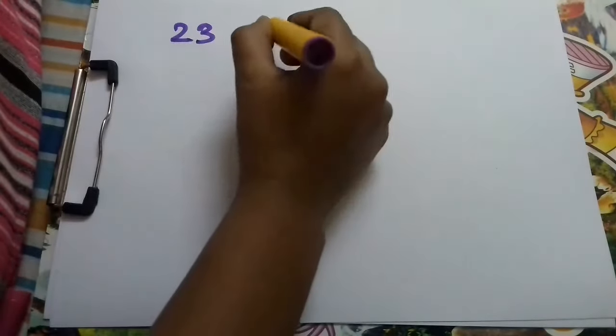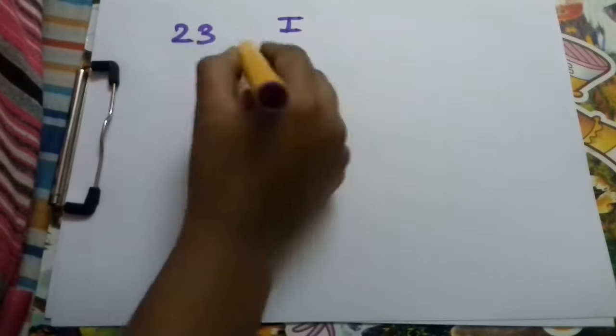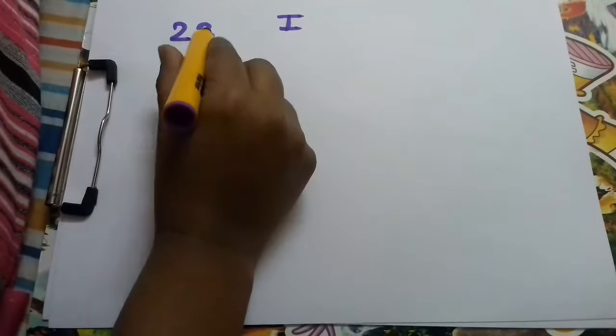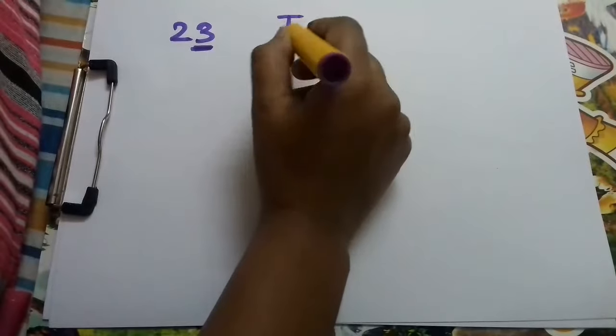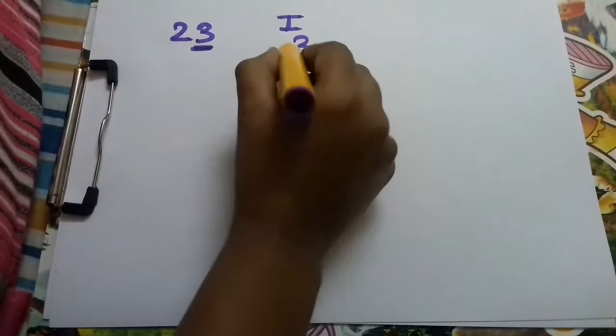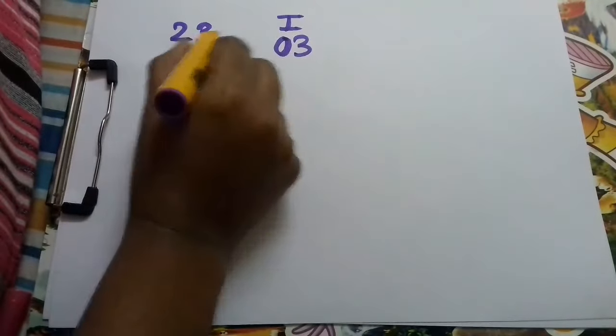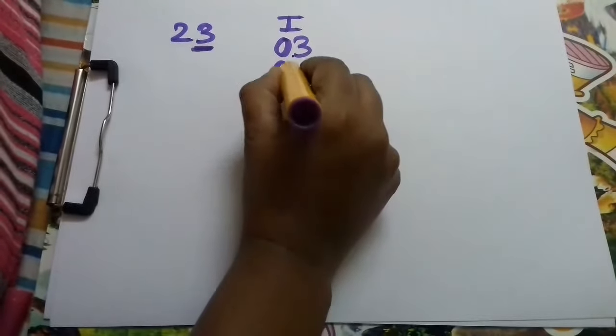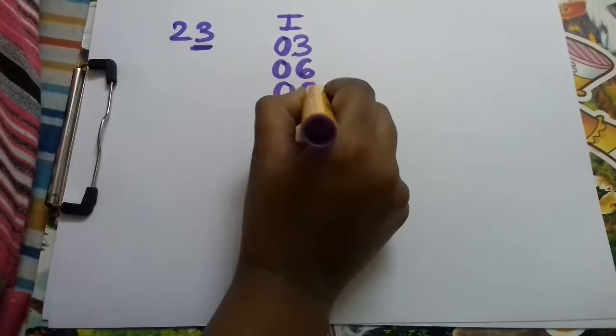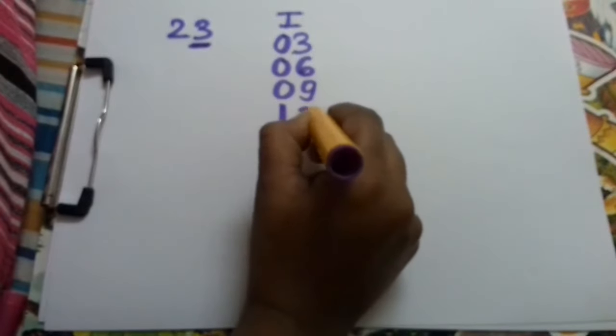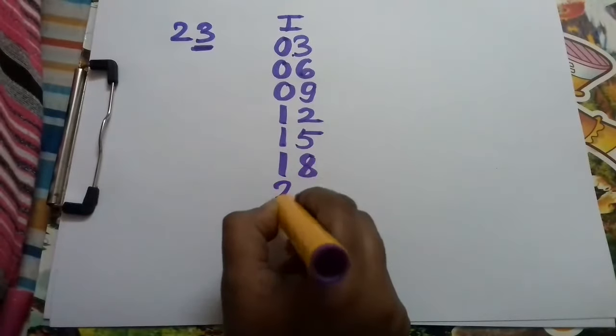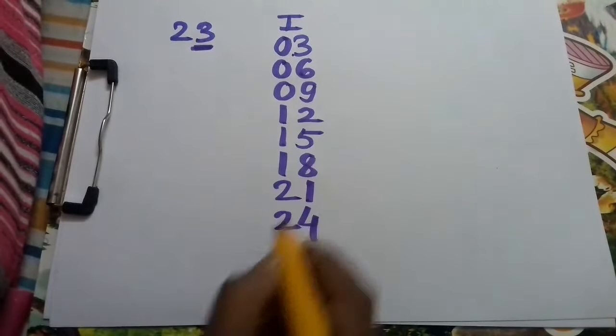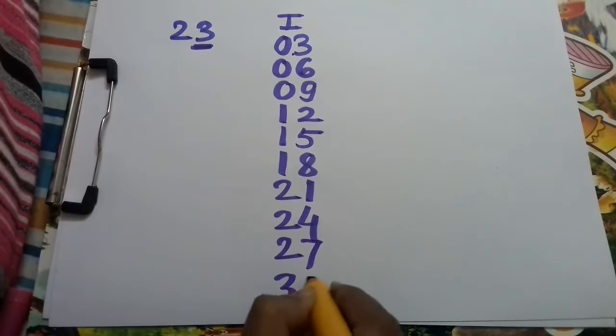Take a number 23 for example. First step, you will write the table of this digit. So write the table of 3 now. Instead of writing just 3, you will write 03, 06, 09, 12, 15, 18, 21, 24, 27, and 30. The first table is over.